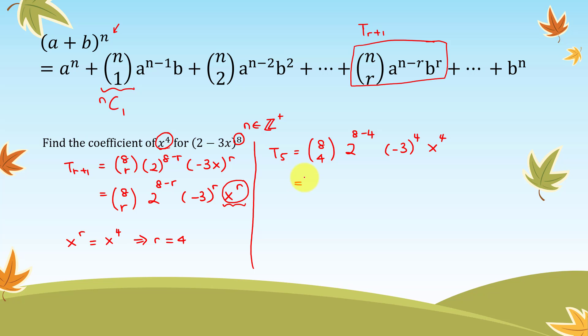8C4, let us use calculator for that. This is 70. 2 to the power of 4, so that is 16. Negative 3 to the power of 4, so that is 81. Then again, we have x to the power of 4. So 70 times 16 times 81, this is 90,720 x to the power of 4.